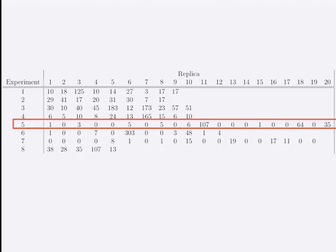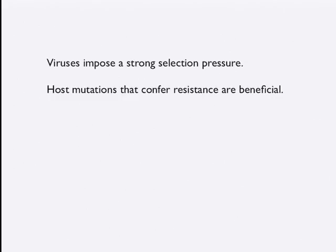This also explains why I claim this really is the most interesting table in biological sciences ever. But it is also relevant to viral ecology. If we take something away from this early study, it's that viruses impose a strong selective pressure. Obviously, host mutations that confer resistance to virus infection and lysis are beneficial. Therefore, viruses induce host evolution — meaning the presence of viruses changes the frequency of genotypes. Now we have this other genotype, this resistant genotype, which dominates, presumably over time.